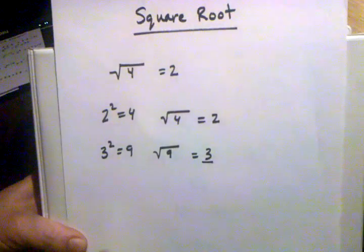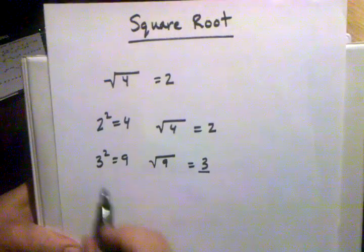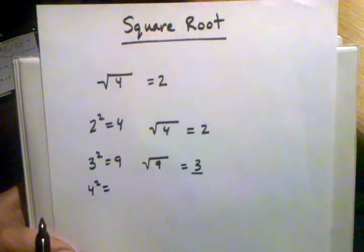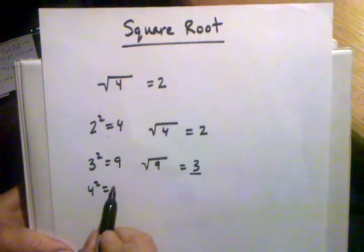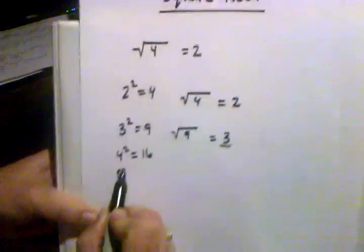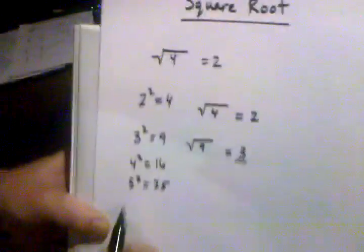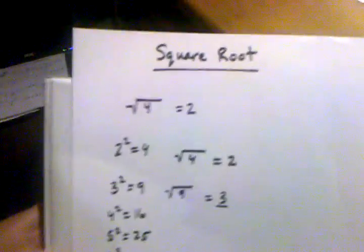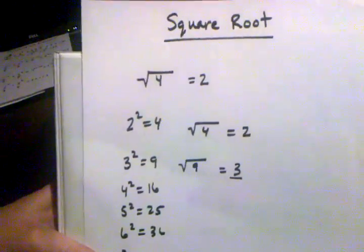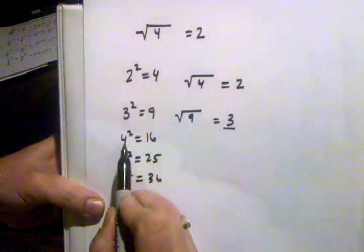There are only a few numbers that give you a nice clean whole number when you take the square root. You can figure that out by working down this pattern: four squared equals sixteen, five squared equals twenty-five, six squared equals thirty-six, and seven squared equals forty-nine, and so on.